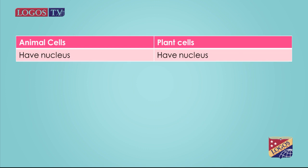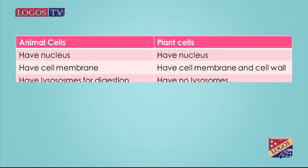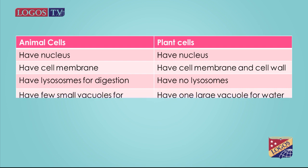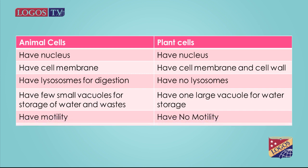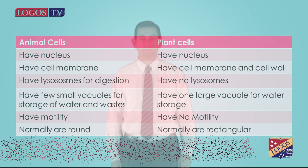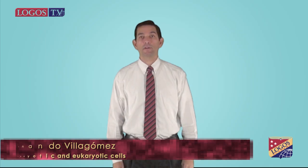How are animal and plant cells different? Animal cells and plant cells both have a nucleus and a cell membrane, but plants have cell walls. Animal cells have lysosomes containing enzymes for digestion, but plant cells don't. Plant cells have one large vacuole for water storage, while animal cells have few small vacuoles for storage of water and waste. Some animal cells have flagella and cilia for motility, but plant cells have no motility. Plant cells are usually rectangular and animal cells are usually round. This is the end of the video — I hope you enjoyed and learned about prokaryotic and eukaryotic cells.